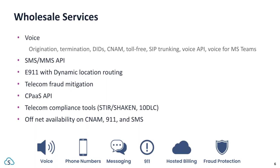Everything we've done is to make your life easier and save you time. All of our products are available via API. For off-net services, we've got CNAM, 911, and SMS. That means if you have telephone numbers on, say, Verizon and you don't want to move them, we can take any of those services and provide them à la carte. We don't actually need to have the telephone number — we can provide any of these services à la carte at a very affordable rate.